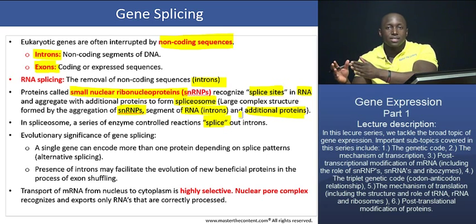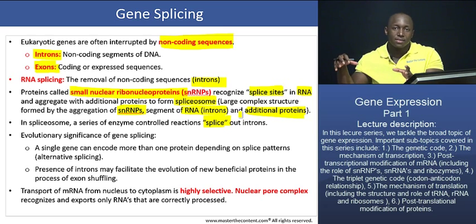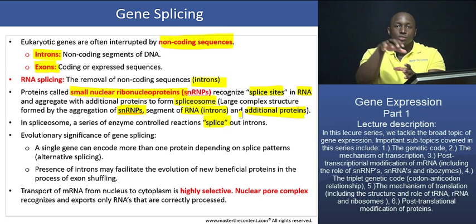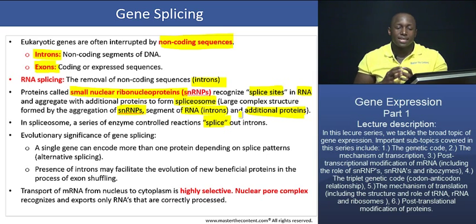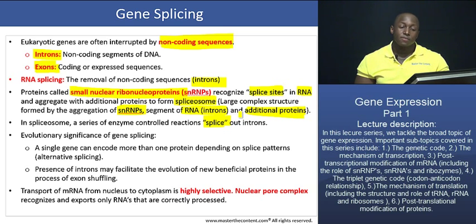What happens in a spliceosome is that a series of tightly controlled enzymatic reactions occur to splice out or cut out these introns from mRNA. Remember that if a gene directs the synthesis of mRNA, all those introns that were in the nucleotide sequence of that DNA are transferred to mRNA. So we have to process out mRNA to remove those non-coding segments — those introns — and splice them out to make mature mRNA that is then ready to perform its function.